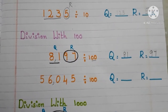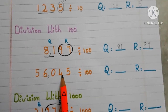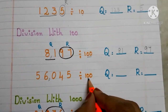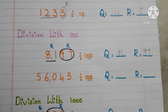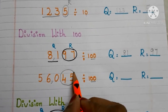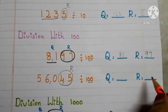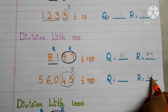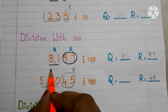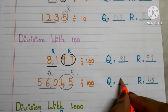Let us go to another example. Here we have 56,045 divided by 100. In 100, how many zeros are there? Two zeros are there. So the last two digits — 4 and 5 — become the remainder, which is 45. The remaining digits become the quotient. The quotient is 560.